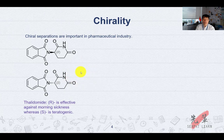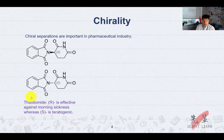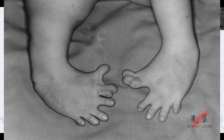The racemic form of thalidomide was mainly prescribed for the morning sickness of pregnant women. Unfortunately, approximately 10,000 children were born with malformations because the R enantiomer of thalidomide is effective against morning sickness, but the S isomer is teratogenic — meaning the babies were born with deformed limbs. It's very tragic because when they synthesized the molecule, they didn't know. But after it was taken by pregnant women, they investigated and showed that the S isomer was the one causing the tragedy.